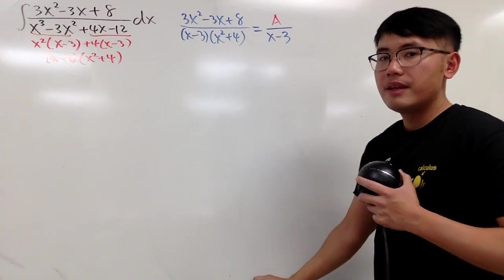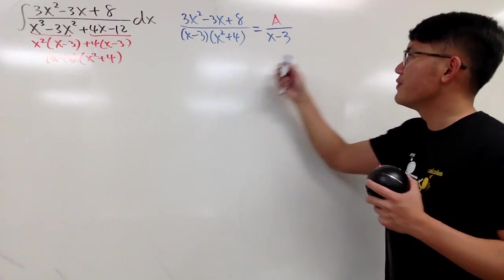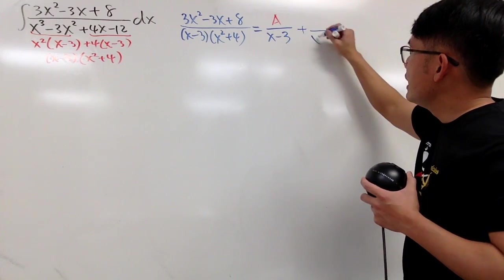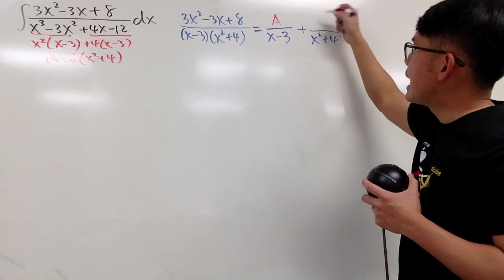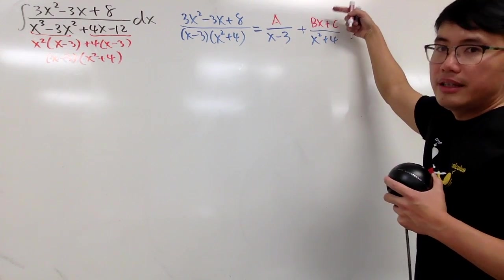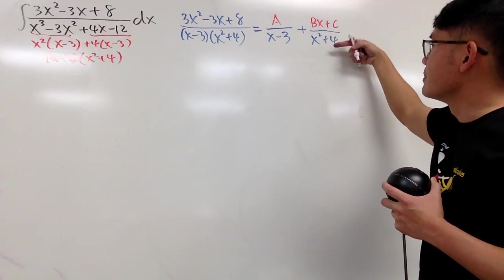And then for this one, x squared plus 4. Well, as you can see, this is quadratic. In this situation, on the top, it has to be a linear, namely bx plus c. It has to be 1 degree less than the bottom, like this.